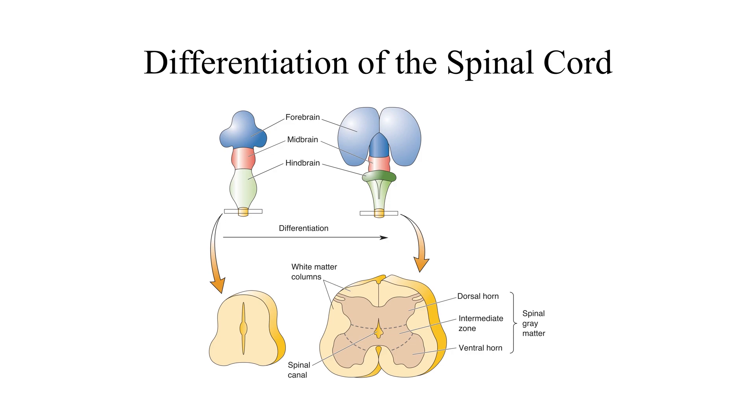The formation of the caudal neural tube into the spinal cord is straightforward compared to the differentiation of the brain. With the expansion of the tissue in the walls, the cavity of the tube constricts to form the tiny CSF-filled spinal canal. Cutting cross section, the gray matter of the spinal cord, where the neurons are, has the appearance of a butterfly. The upper part of the butterfly wing is the dorsal horn, and the lower part is the ventral horn. The gray matter between the dorsal and ventral horns is called the intermediate zone.